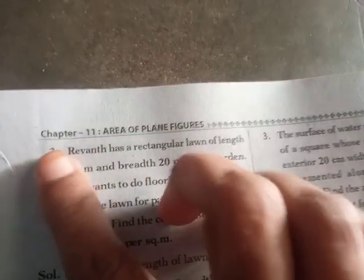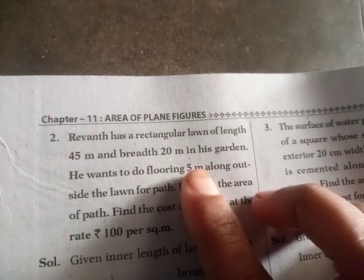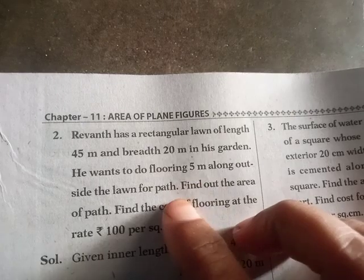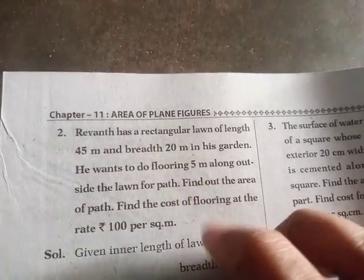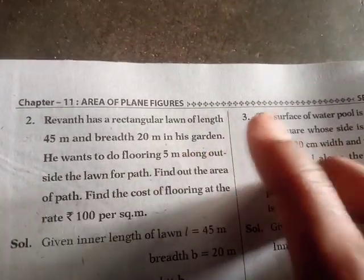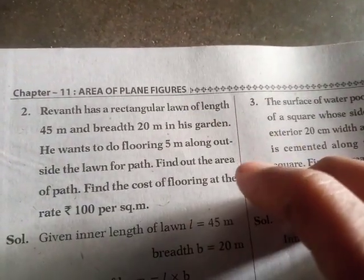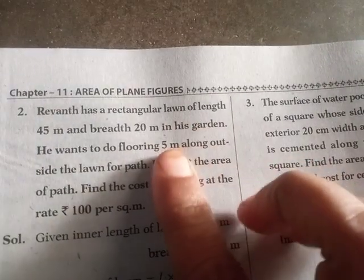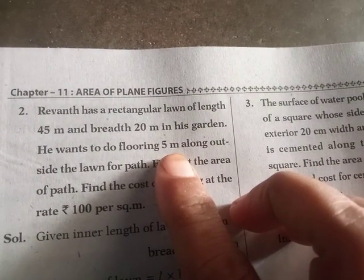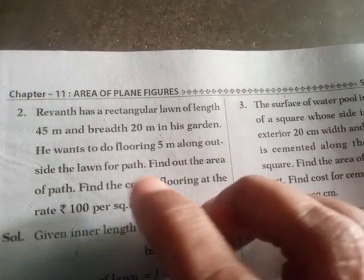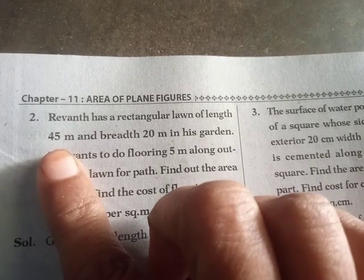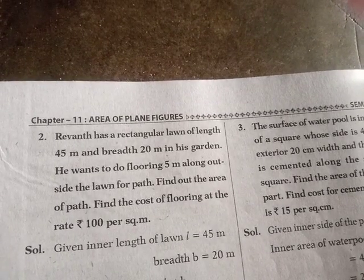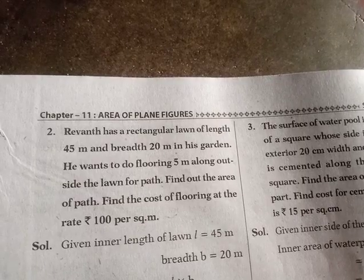The lawn is rectangular in shape. Here is the garden. We want to do flooring in the garden. We will take the solution.